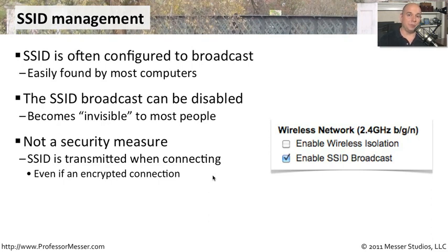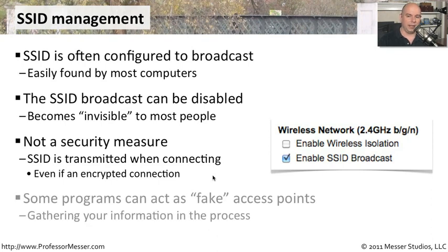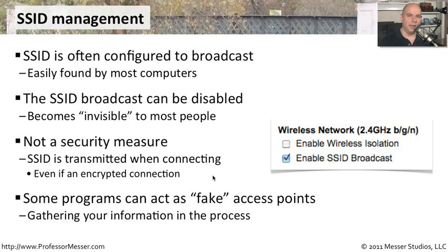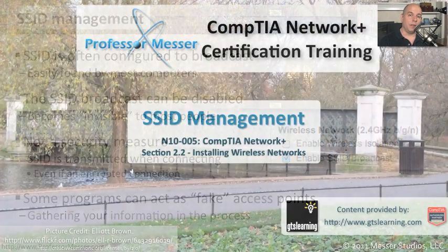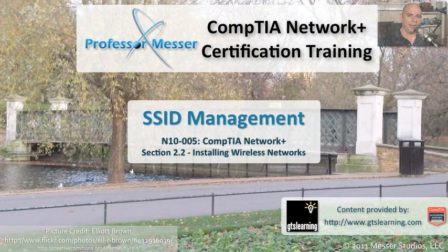Even if the rest of the communication is encrypted, the SSID is always sent in the clear. And even worse, some programs can act as fake access points that pretend to be legitimate access points, and you'll end up connecting to someone's computer — then they'll be able to see everything you send over that wireless network. So be very careful about whether you enable or disable that wireless broadcast, and also be careful about which access points you happen to connect to.